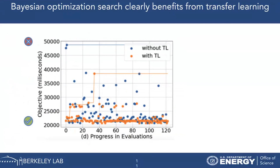I really like this plot for showing why Transfer Learning works so well. Bayesian optimization proposes a new candidate to evaluate in each iteration. The blue points represent conventional Bayesian optimization without Transfer Learning — their suggested candidates are spread across the search space. The orange points represent our Bayesian optimization with Transfer Learning, and those suggested candidates are all concentrated in the low execution times, meaning Transfer Learning proposes better configurations in each iteration. That's why it works well.